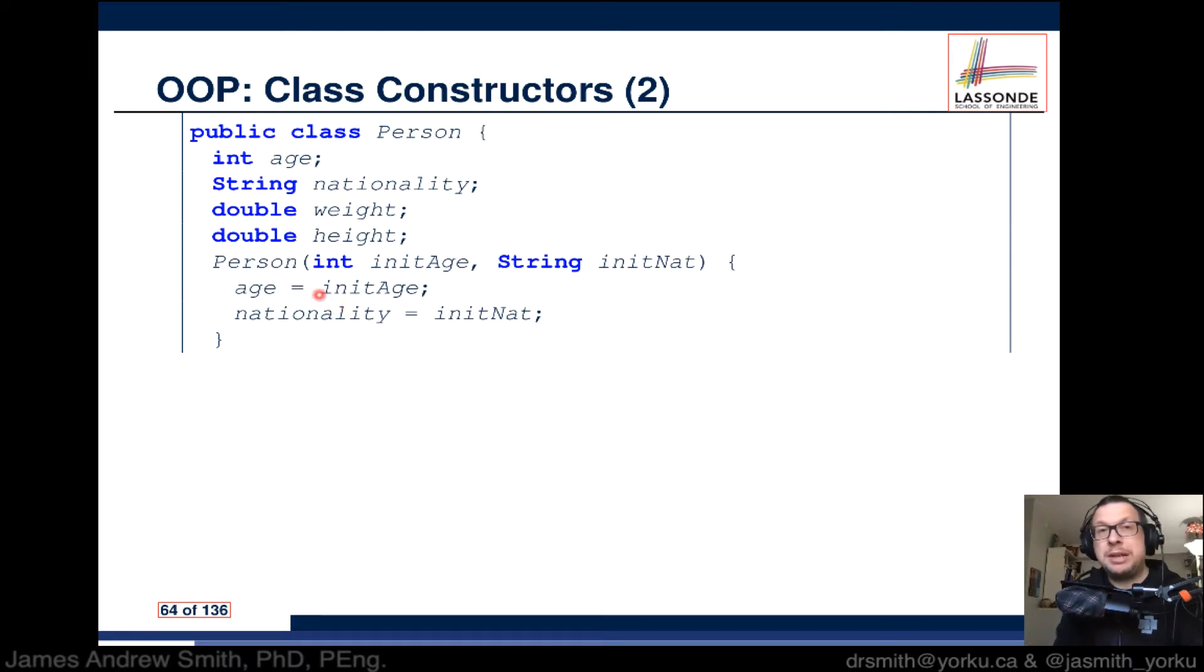We say what we do with those. In this case, we are taking that input parameter and that one, and we're assigning the first one to age, which was right here, and nationality, which was right there.